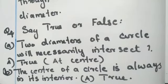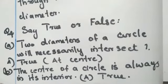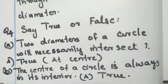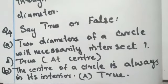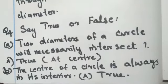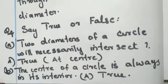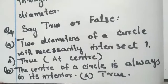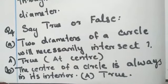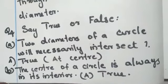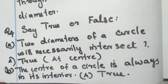Last question from this chapter. Question number 4. Say, true or false. A question. Two diameters of a circle will necessarily intersect. What do you mean by intersect? Intersect means meet at a point. So, here, statement is two diameters of a circle will necessarily intersect. True or false? Because, diameters will meet at center. So, they will intersect at center.